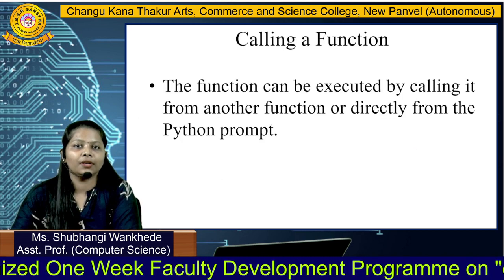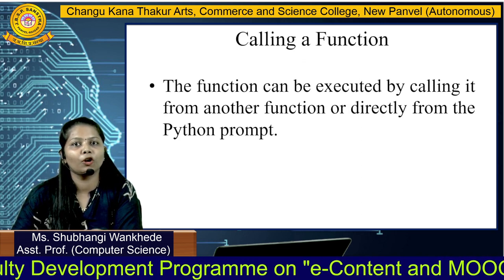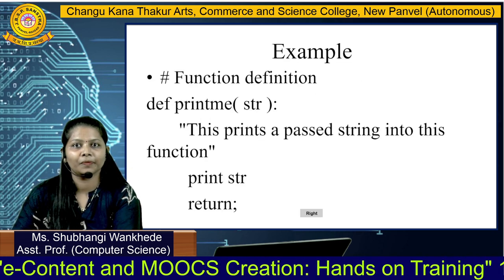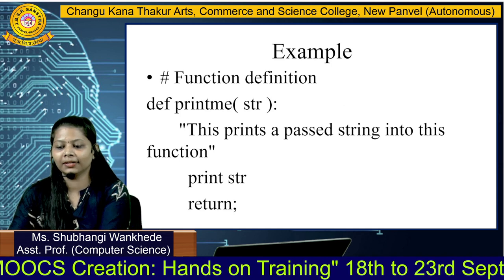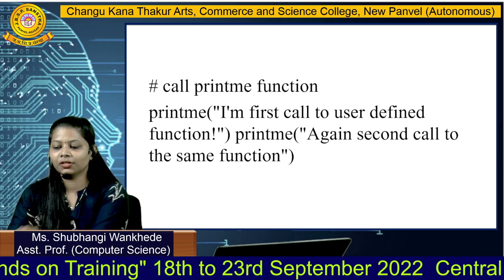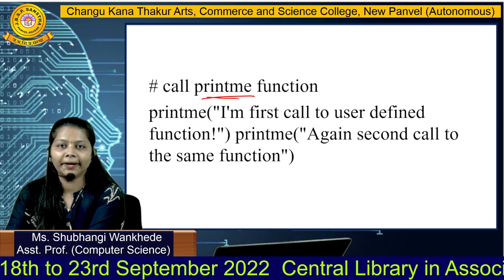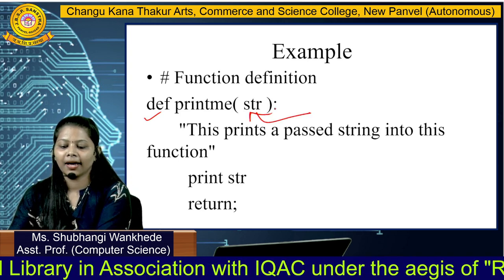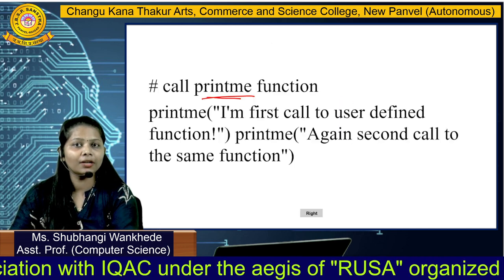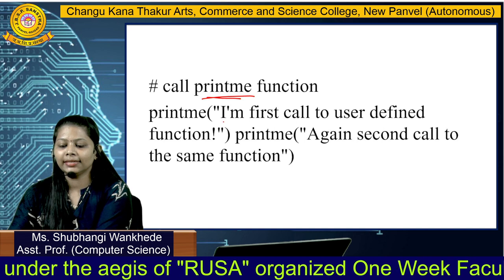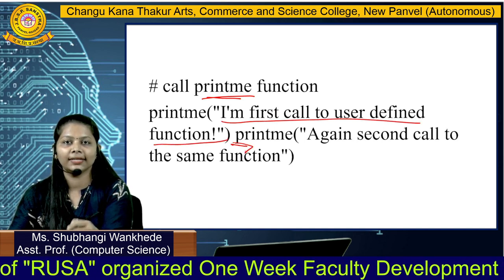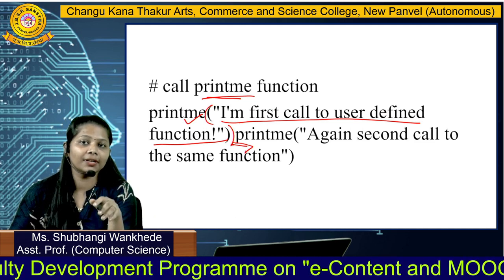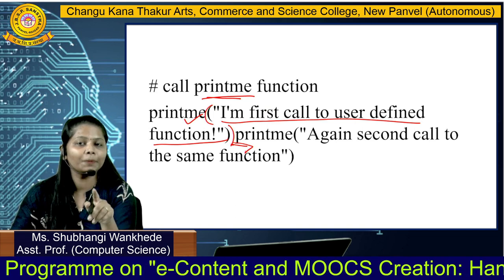How do we call a function? A function can be called by writing the function name along with its parameter. Another function can call the function, or directly we can call it from the Python prompt. The function name is 'print_me', written followed by the parenthesis. The function has an argument or a parameter, and while calling the function we have to follow that rule — we pass the argument to the function when calling it.